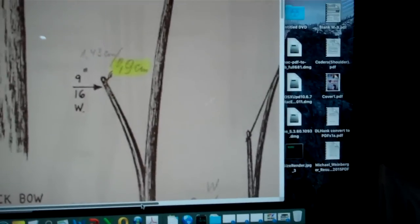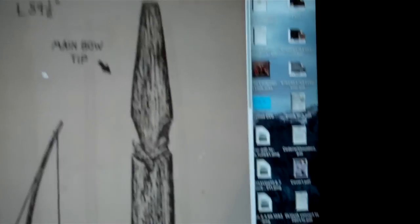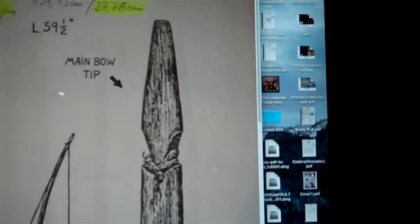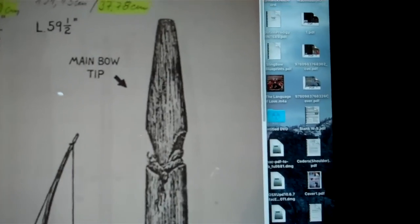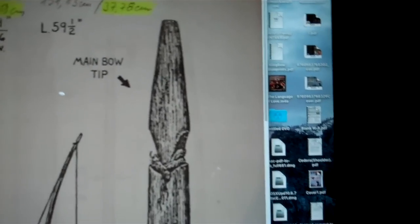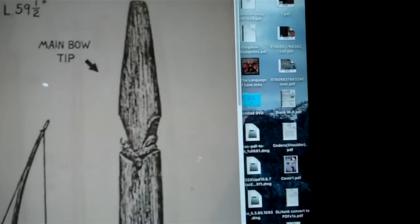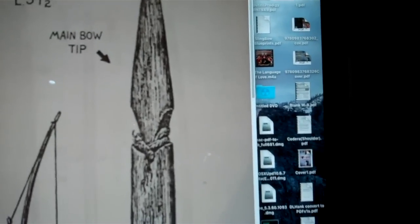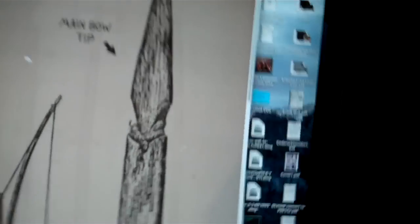The main bow tip is more of a typical bow, what you'd see a pointed tip. Mine are kind of square. I made, but you know, I can always change that. It's very easy for me to change that later. But that's, there you go. That's what the main tip looks like. And I just wanted to share with you.